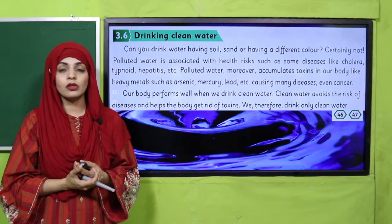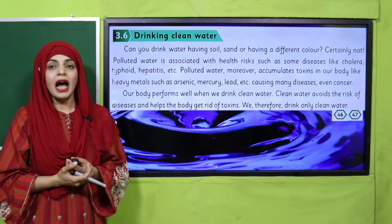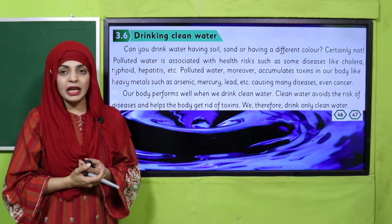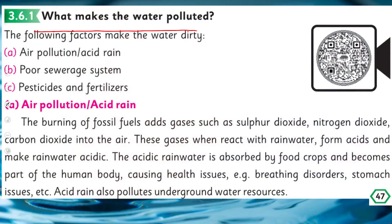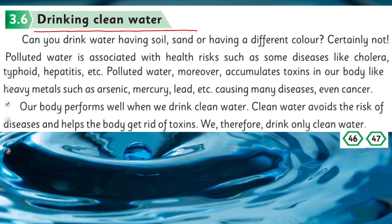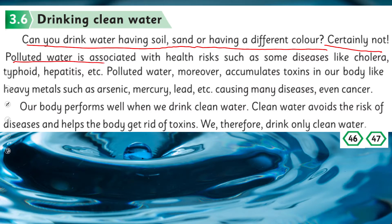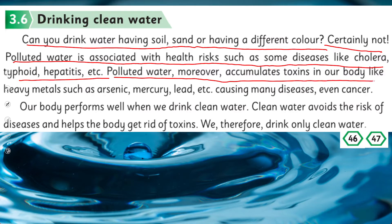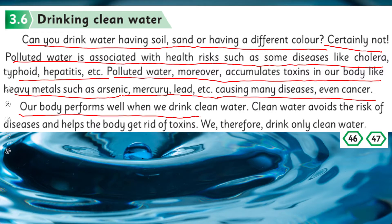Let's move to page number 46 for the reading. Put your fingers where I will read: 'Drinking Clean Water.' Can you drink water having soil, sand, or having a different color? Certainly not. Polluted water is associated with health risks such as diseases like cholera, thyroid, hepatitis, etc. Polluted water moreover accumulates toxins in our body like heavy metals such as arsenic, mercury, lead, etc., causing many diseases, even cancer. Our body performs well when we drink clean water. Clean water avoids the risk of diseases and helps the body to get rid of toxins.